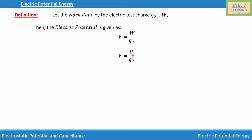Now V = U/Q₀ because work is stored as potential energy. So we write electric potential V equals potential energy over Q₀.